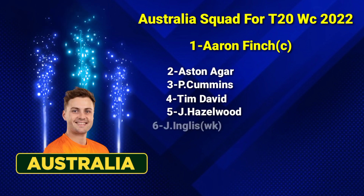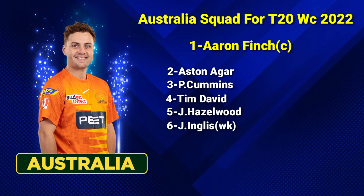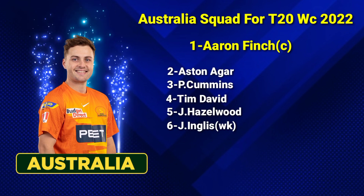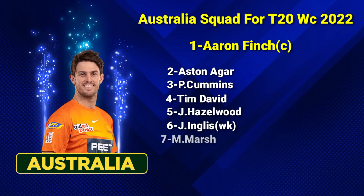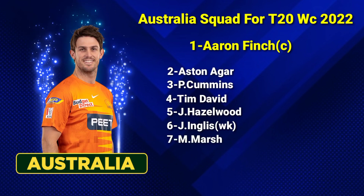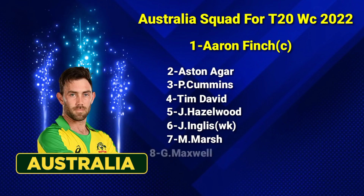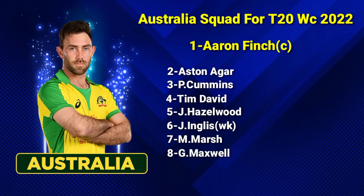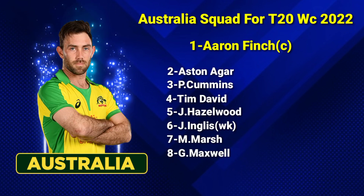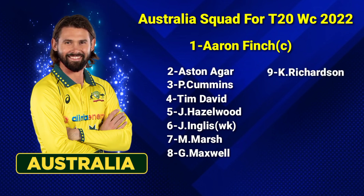Number 6: Josh Inglis, wicket-keeper. Number 7: Mitchell Marsh, all-rounder. Number 8: Glenn Maxwell, all-rounder. Number 9: Kane Richardson, right-arm fast bowler.